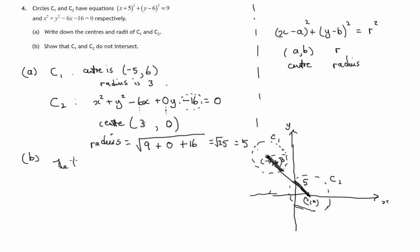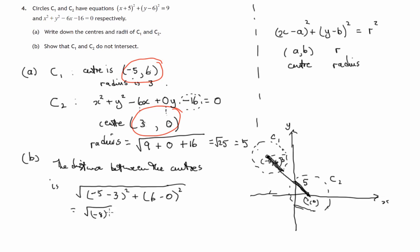The distance between the centers, there's C₁ and there's C₂. So the x difference, negative five minus three, and the y difference, six minus zero. So that's the square root of negative eight squared plus six squared. That's 64 plus 36, square root of 100, which is 10.